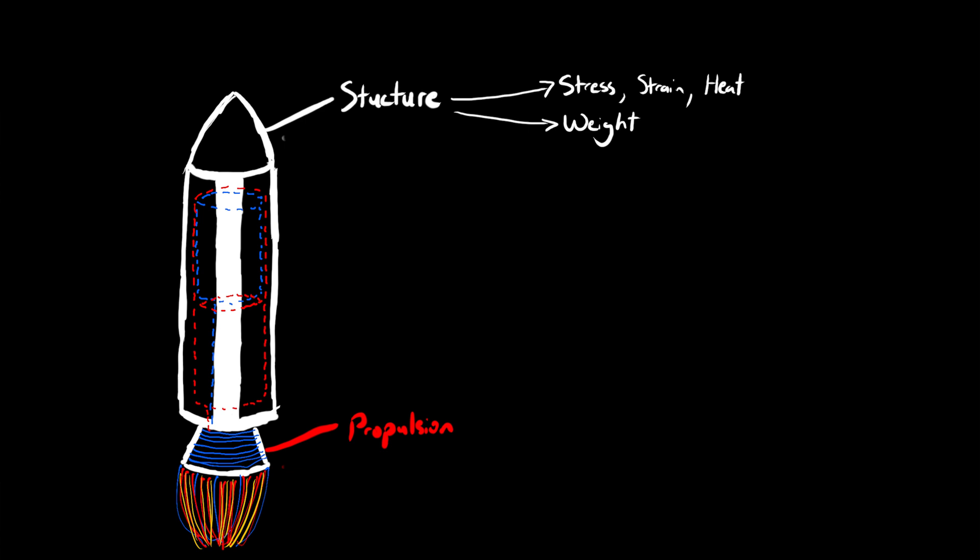Experts in thermodynamics, mainly mechanical and chemical engineers, work to balance the weight and power of the propulsion systems. Because any extra weight means less delta V. If you want a rocket to reach its destination, the weight needs to be significantly less than the thrust of the engines.